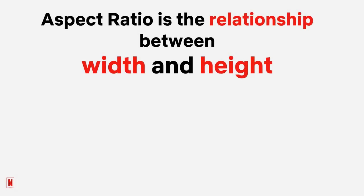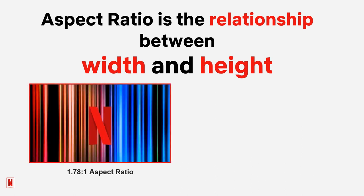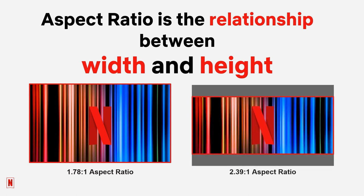Aspect ratio is simply the relationship between the width and height of any given rectangle. On the left, we have an aspect ratio of 1.78 to 1, which is the full screen display ratio of most TV and laptop screens. On the right, we have a widescreen 2.39 to 1 aspect ratio, which is the screen size generally associated with theatrical exhibition.